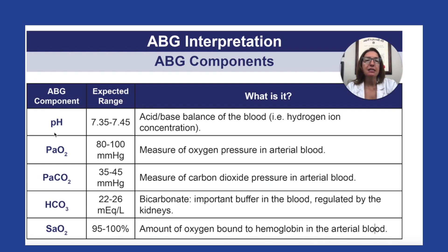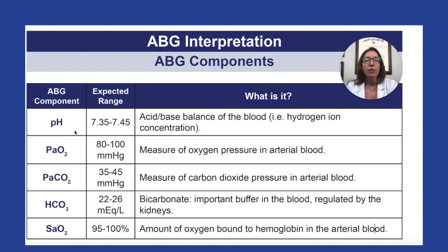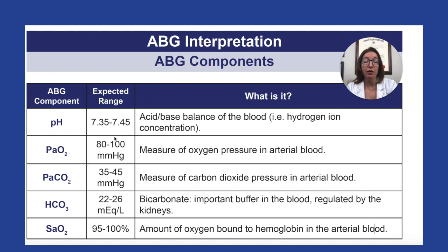Once you have your blood sample, it gets sent to the lab and then you get your ABG results back, which will have the following components. The first thing you'll get is the pH, which is essentially telling you the acid-base balance of the blood — whether acidosis is present or alkalosis is present. It measures the hydrogen ion concentration in the blood, and we would expect a value somewhere between 7.35 and 7.45.